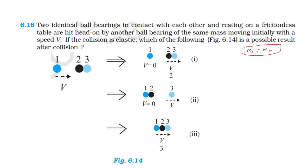After collision, velocity exchange takes place. The first particle has mass and initial velocity u, and the second particle has initial velocity u₂. The final velocity of the first particle equals the initial velocity of the second particle, and the final velocity of the second particle equals the initial velocity of the first particle. In one-dimensional elastic collision between two equal masses, velocity exchange takes place.